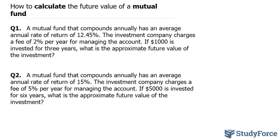Let's start off by highlighting some key numbers. We know the percentage return is 12.45% and the company takes 2% from that. Furthermore, we are told that $1,000 is invested for three years and that it is compounded annually.